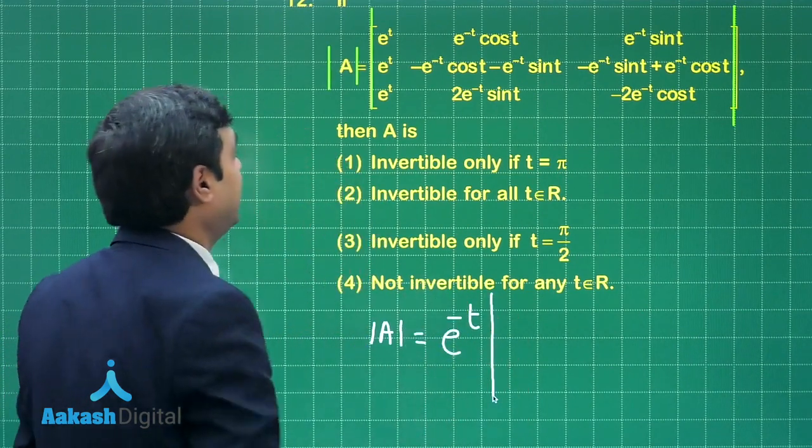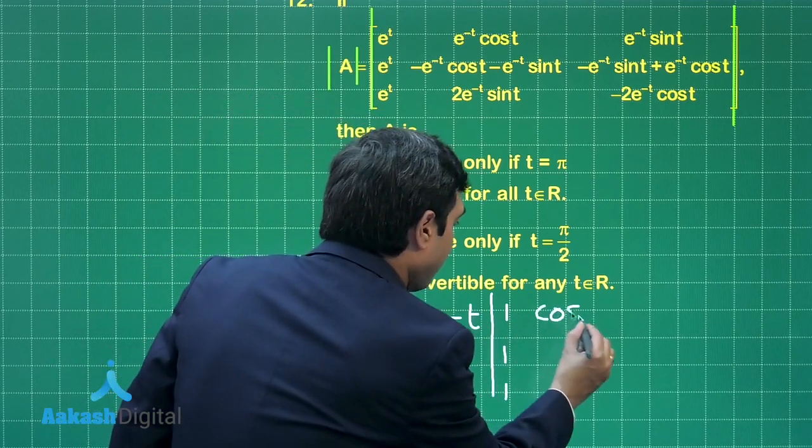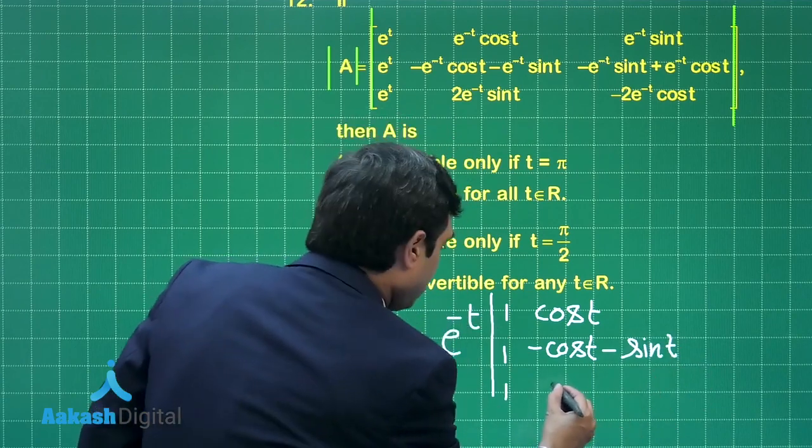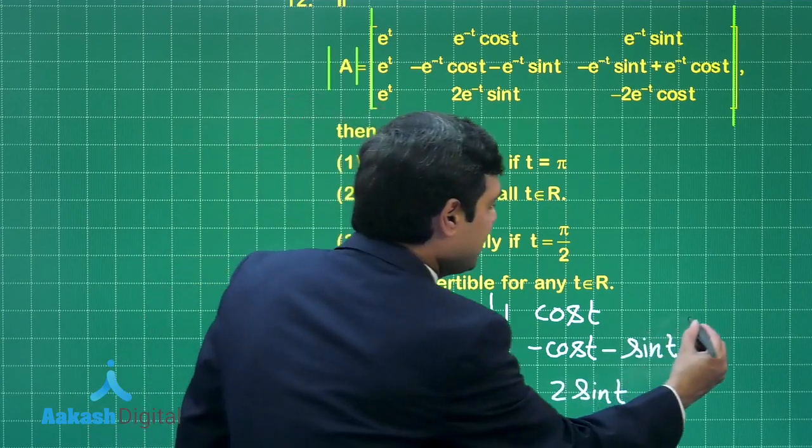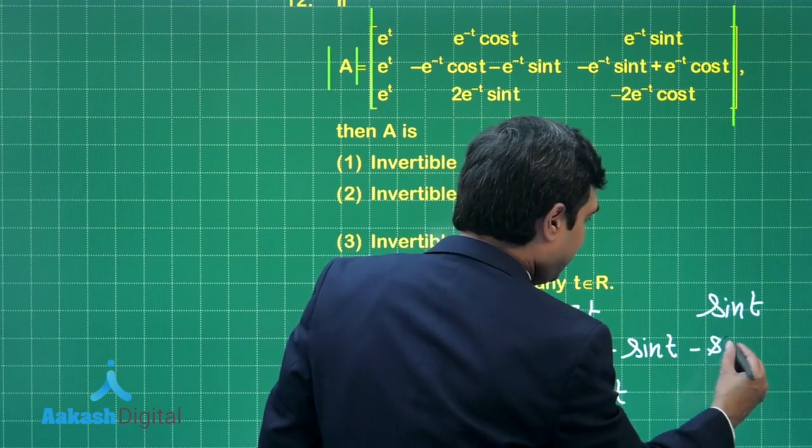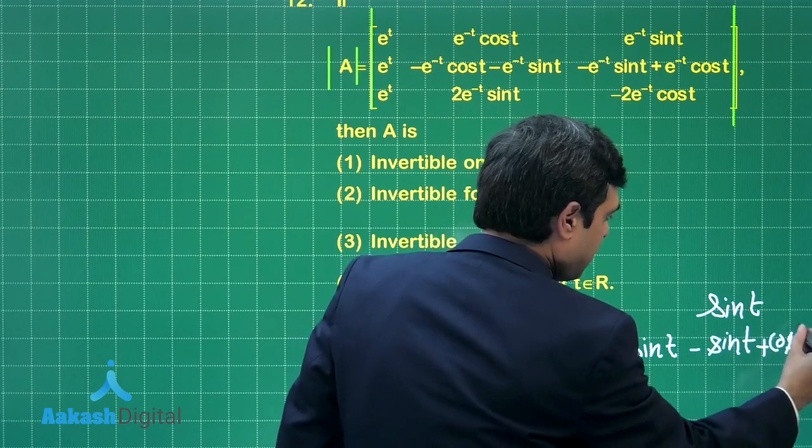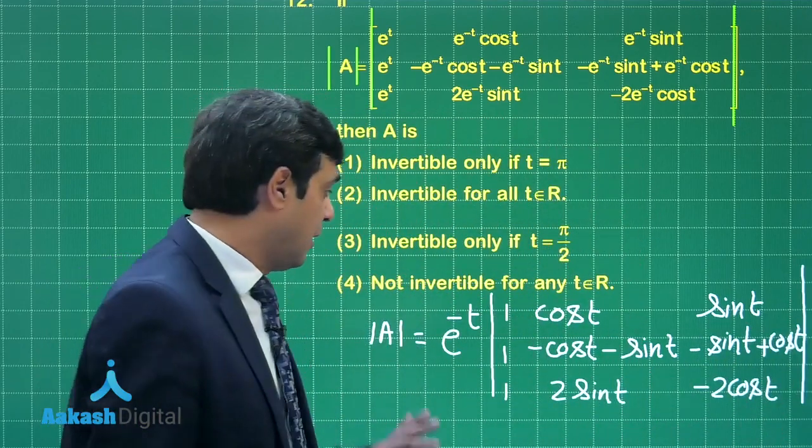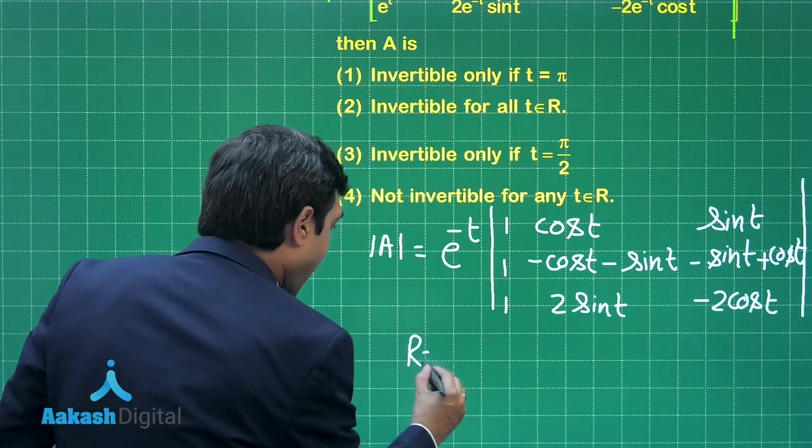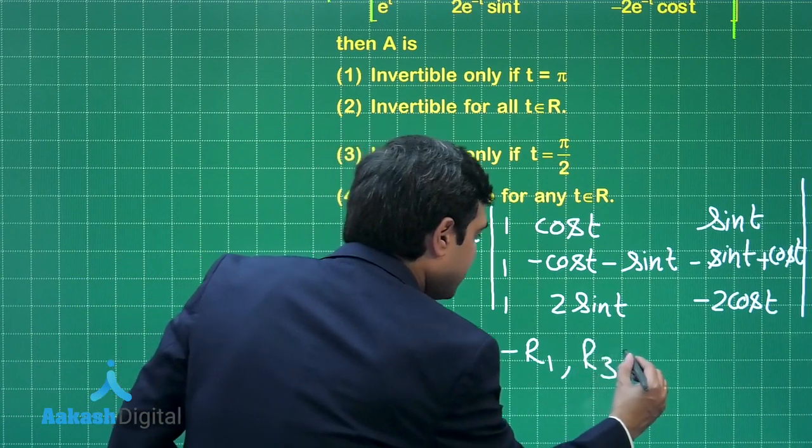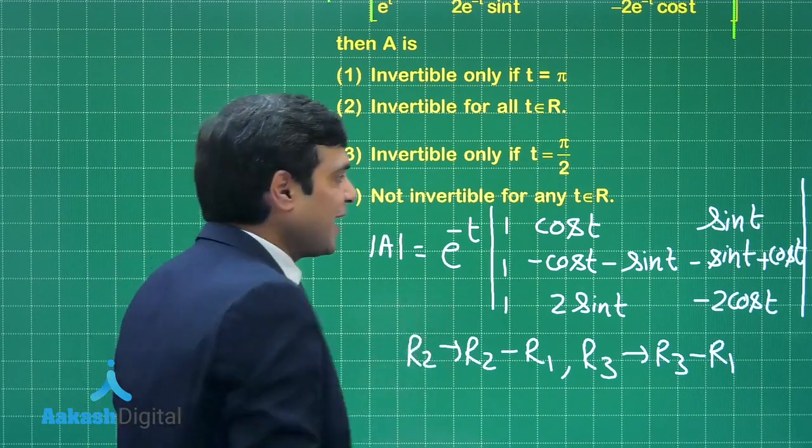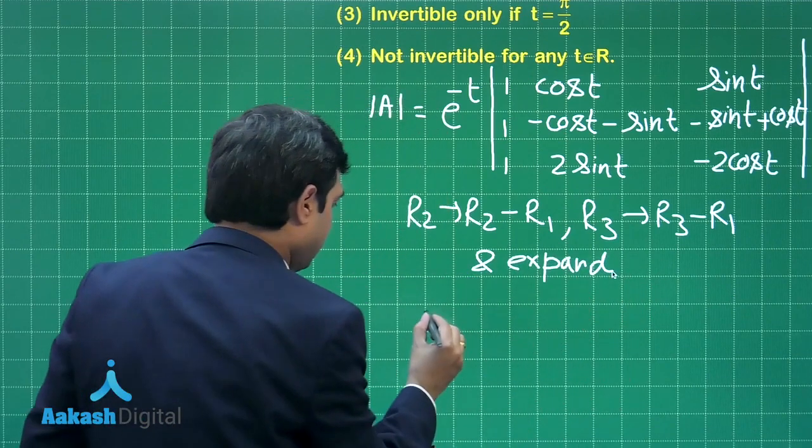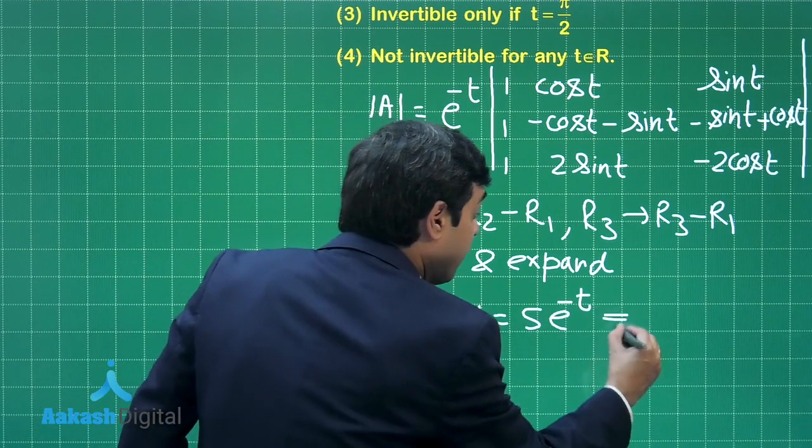This is e⁻ᵗ multiplied with 1, 1, 1, 1, cos t, -cos t, -sin t, 2sin t, then next column we have sin t, -sin t + cos t, and the last element is -2cos t. Now we can apply some operations to simplify like R₂ replaced with R₂ - R₁ and then R₃ replaced with R₃ - R₁. So that you find the zeros here, just expand, simplify, you are getting the result simplified and expand, we get determinant A = 5e⁻ᵗ which is clearly non-zero.